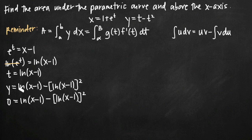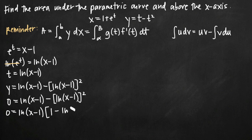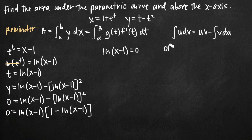To solve the equation set to zero, we factor out natural log of x minus 1 from the right-hand side. When we factor that out we get natural log of x minus 1 times 1 minus natural log of x minus 1 equals zero. Now we can solve each factor equal to zero separately, giving us natural log of x minus 1 equals 0, or 1 minus natural log of x minus 1 equals 0.